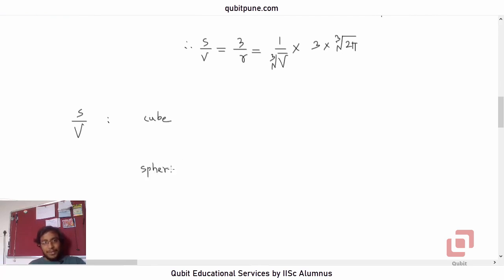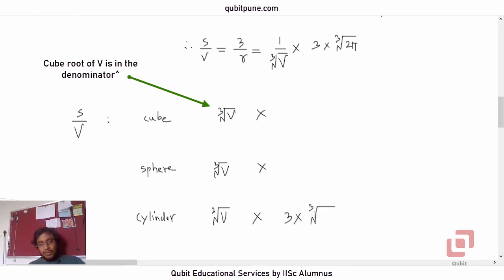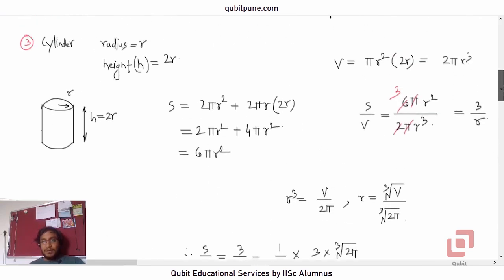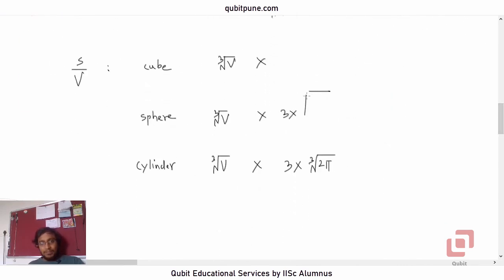So comparing the S/V ratios: all three have a factor of 1/∛V times some constant. For the cylinder the constant is 3·∛(2π), and for the sphere it is 3·∛(4π/3). We can rule out the sphere already because 2 is greater than 4/3, so the S/V ratio of the cylinder is greater than that of the sphere. The race is now between the cylinder and the cube.